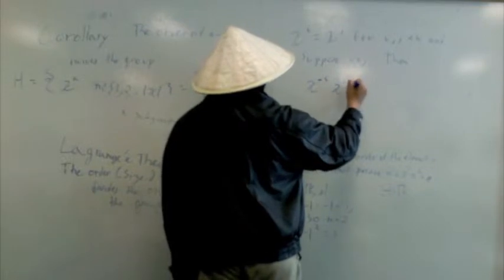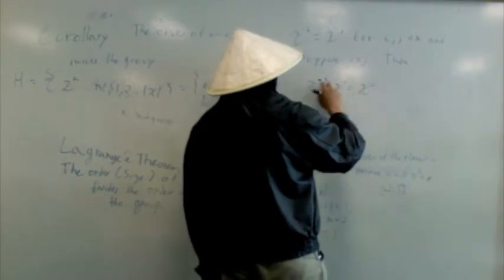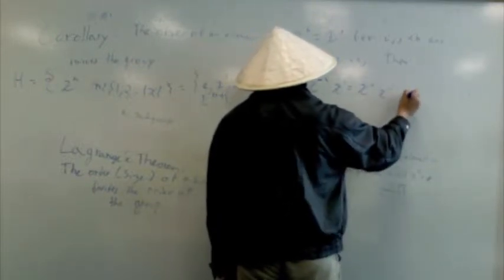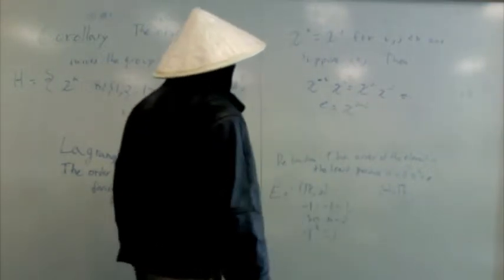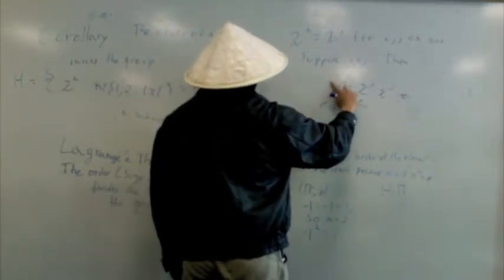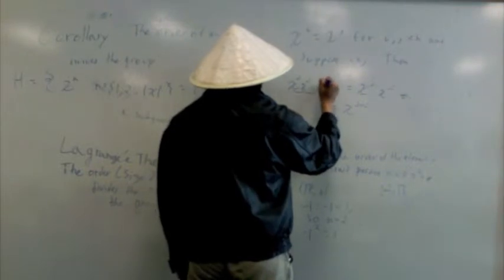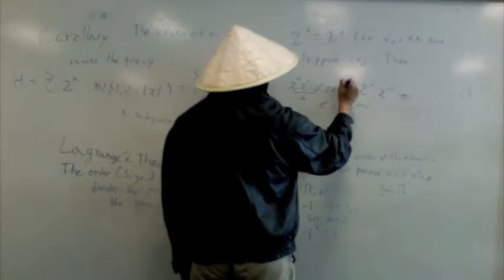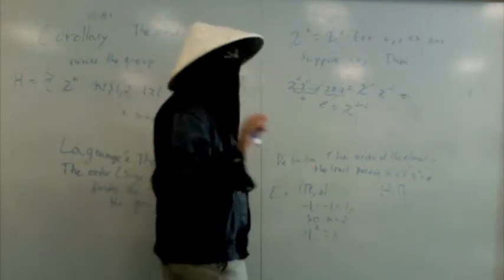You can assume i is the smaller one. Multiply both sides by x^(-i). That gives e equals x^(j-i). All this is just x inverse times x^i, and multiplied by x^j. It's just my fancy lingo. And this is just generalization.